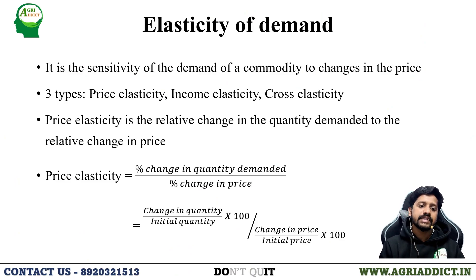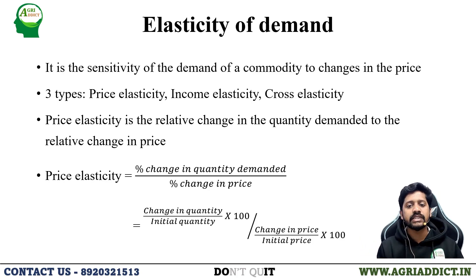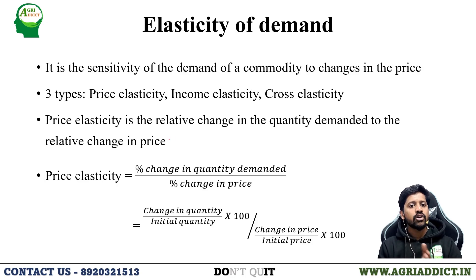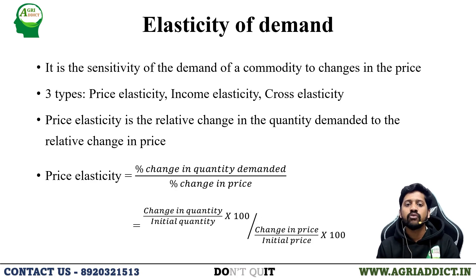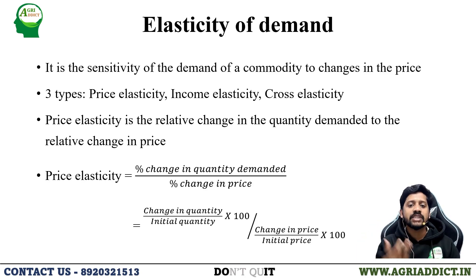Elasticity of demand is the sensitivity of demand of a commodity to changes in price — to what extent quantity demanded will change for a unit rupee increase or decrease in price. There are three types of demand: price demand, income demand, and cross demand. Price demand is the functional relationship between the price of a commodity and quantity demanded. Income demand is the functional relationship between quantity demanded and the consumer's income level. Cross demand is the functional relationship between quantity demanded of a commodity and the price change of a related commodity — which can be a substitute or a complement.